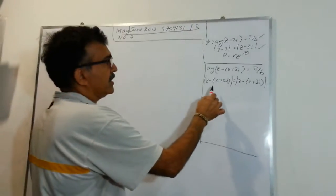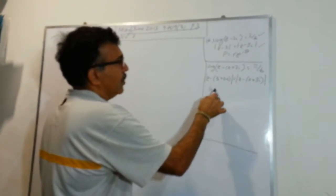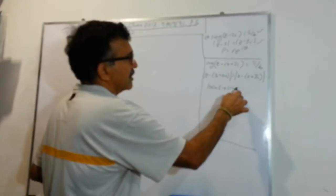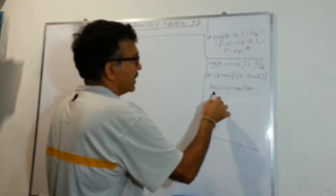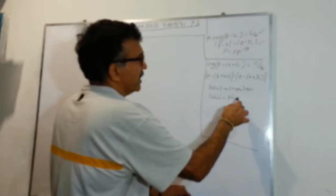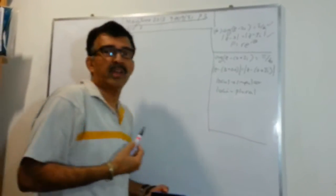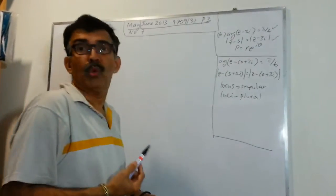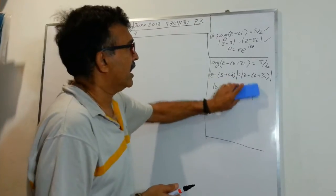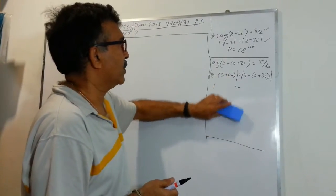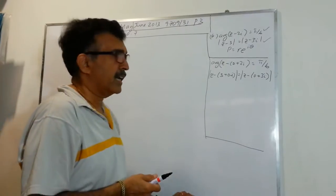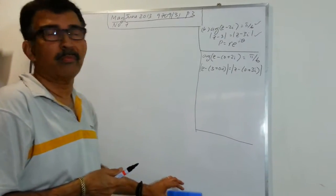Just a quick note: we are dealing with the word 'locus', which is singular, and 'loci' which is plural. So two locuses become two loci. Don't get too worried about it. They have given us the loci and they are saying that they intersect at a point P.